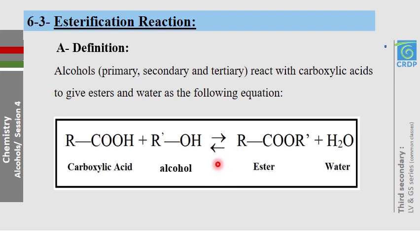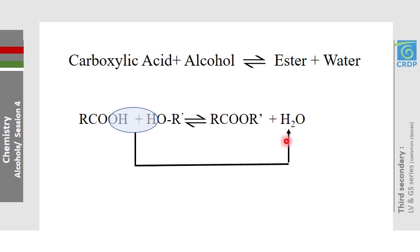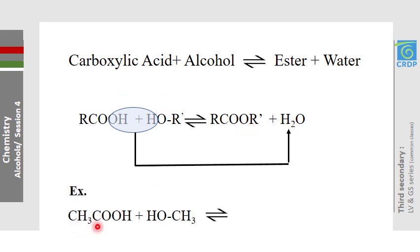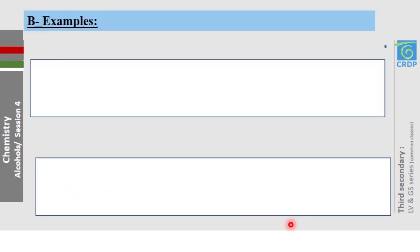You have seen this before in chapter 3 on chemical equilibrium. The OH group is taken from the carboxylic acid and the hydrogen atom is taken from the alcohol to give us water (H₂O), and the remaining parts are connected together to give us the ester. For example, ethanoic acid with methanol: OH with H gives water, and the two remaining parts connect to form the ester.